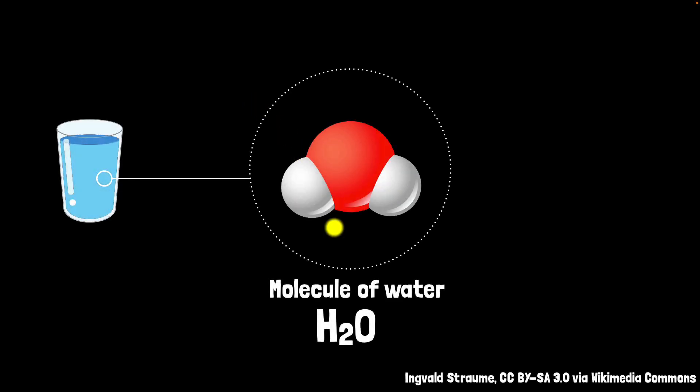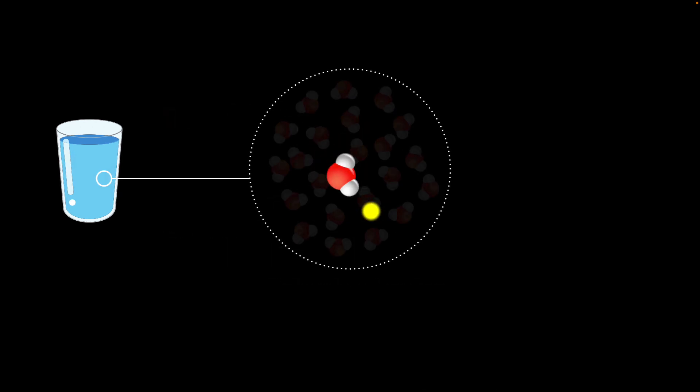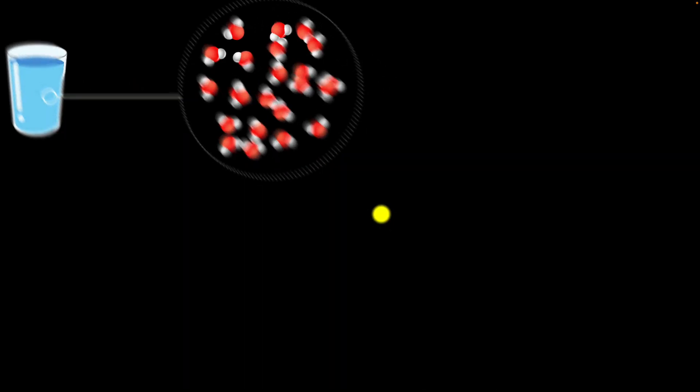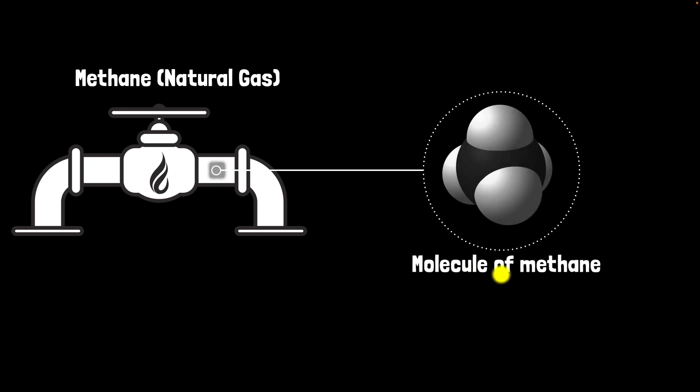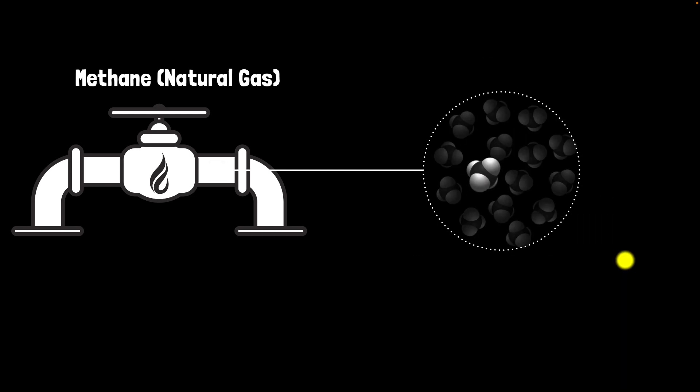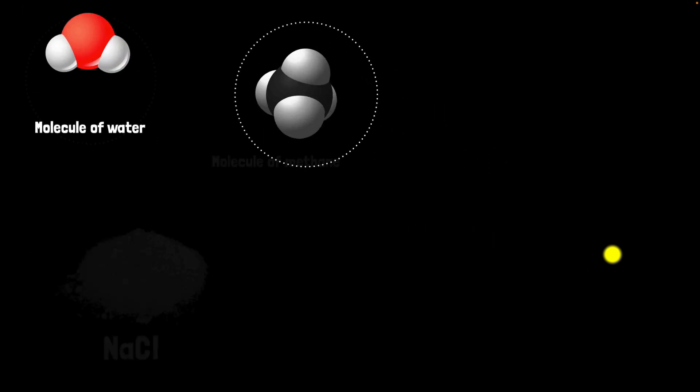If you zoom into water, you will find a molecule of water where you have one oxygen atom attached to two hydrogen atoms. You will find trillions and trillions of them. Similarly, if you were to zoom into methane, which we also call natural gas, you will now find molecules of methane, which happens to be one carbon atom attached to four hydrogen atoms. Again, you will find trillions and trillions of them.